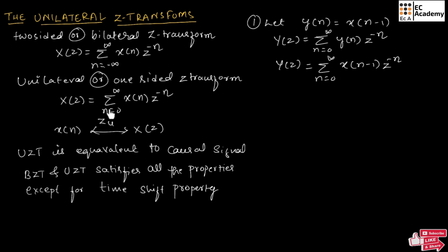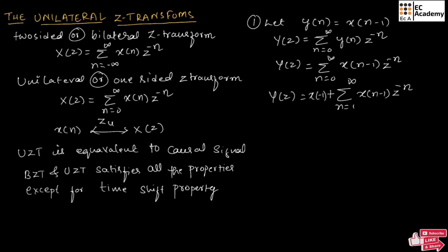If you observe the formula for the unilateral Z transform, the unilateral Z transform is performed for X of n. Here we are having X of n minus 1, so we can write the above expression as Y of Z is equal to summation of n is equal to 1 to infinity, X of n minus 1, Z to the power of minus n. For this summation, we can add X of minus 1 because we are commencing from n is equal to 1 to infinity for X of n minus 1.